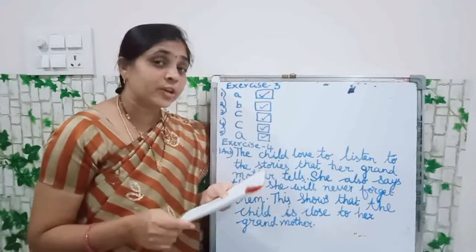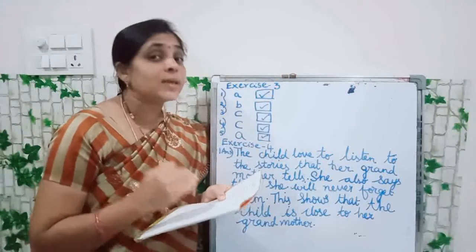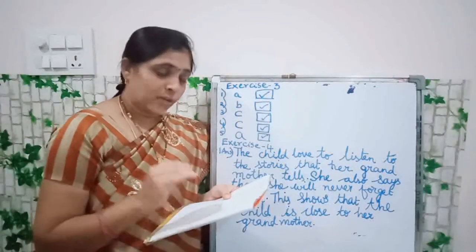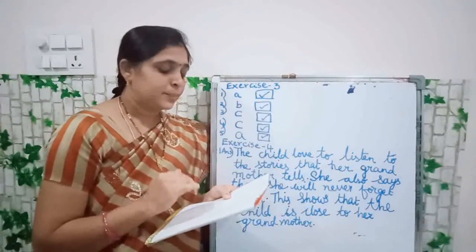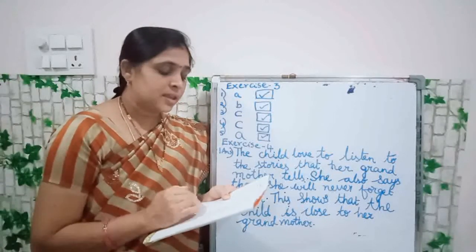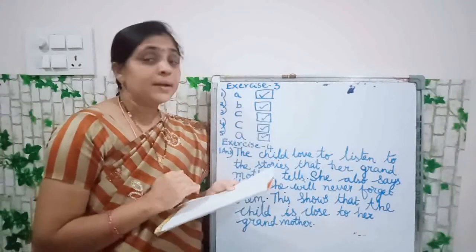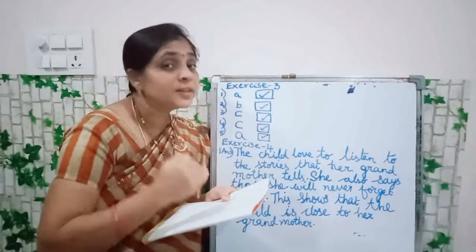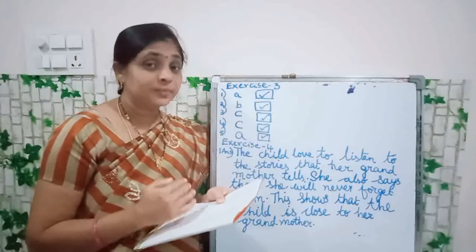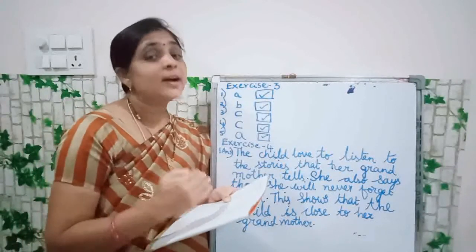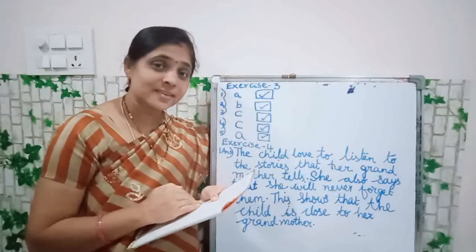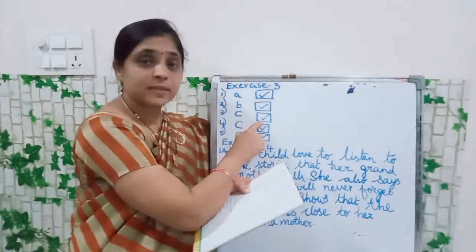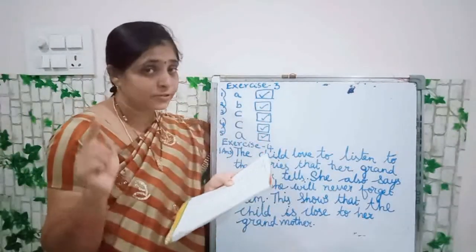Next one: Who is the child talking to? Options: A — Uncle, B — Sister, C — Grandmother, D — Mother. Who is the member to whom the child is talking to? The child is talking to her grandmother. So what is the answer? C — grandmother. Tick in C.